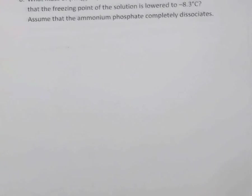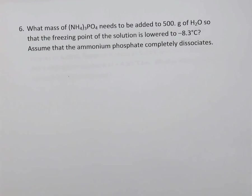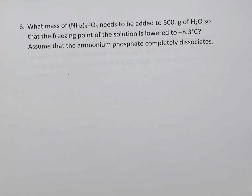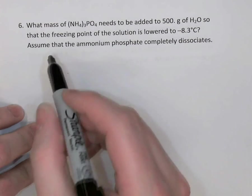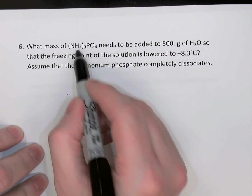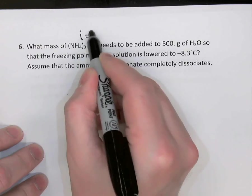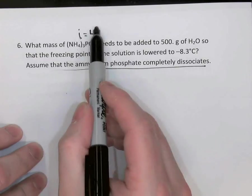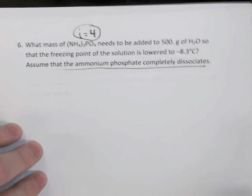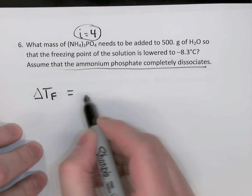Let's take a look at another example, number six. What mass of ammonium phosphate must be added to 500 grams of water so that the freezing point is lowered to minus 8.3 degrees Celsius? And we'll assume that ammonium phosphate completely dissociates as we do this. We know that ammonium phosphate has three ammoniums and one phosphate ion. So three ammoniums and one phosphate tells me that its Van't Hoff factor is going to be four. And so when it says assume that it completely dissociates, it's telling us to assume that i is four. All right, so we want freezing point, so the freezing point change equation comes to mind.